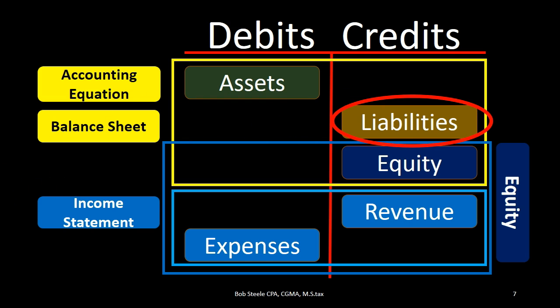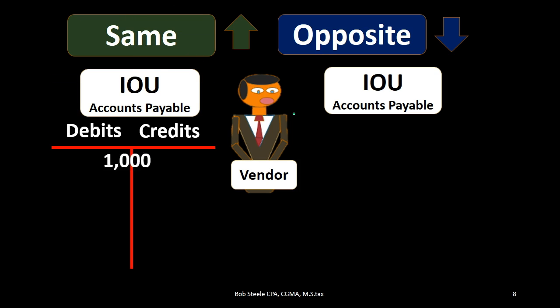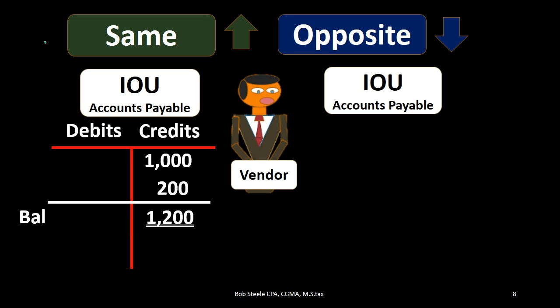Now let's move to liability accounts, which have a normal credit balance. We'll look at accounts payable — the most common liability account, representing what we owe a vendor for something purchased in the past, similar to a credit card bill. If we have a $1,000 beginning balance in accounts payable, that means it's a credit balance of $1,000. If we want to make it go up — say we purchased something on account — we apply our one rule and do the same thing: credit it by $200, bringing the balance up to $1,200.